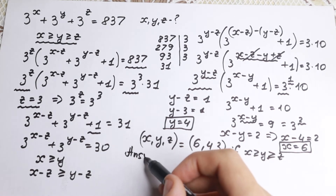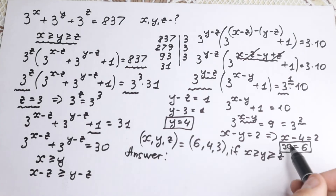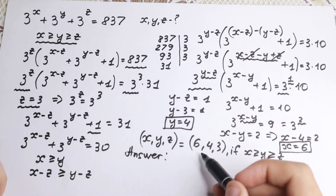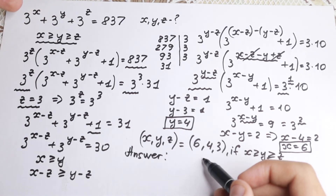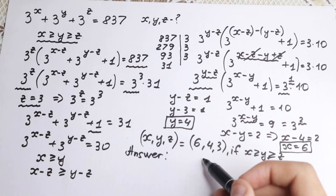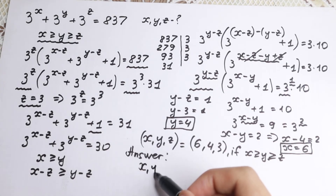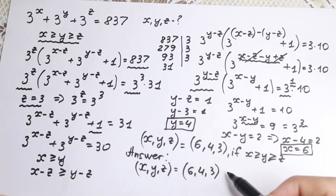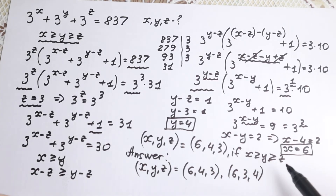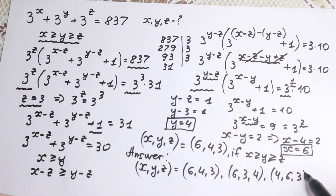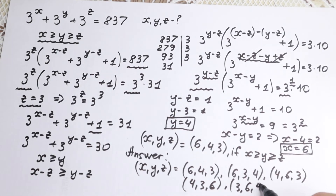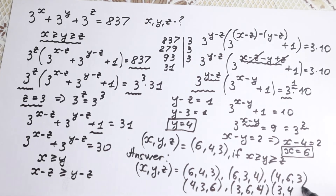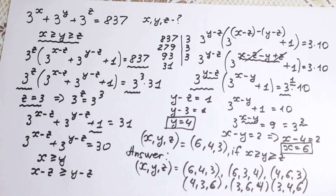So all combinations are: (6, 4, 3), (6, 3, 4), (4, 6, 3), (4, 3, 6), (3, 6, 4), and (3, 4, 6). These are all six permutations — our complete solution to this interesting problem, since addition is symmetric and 3 to these powers give the same sum regardless of order.